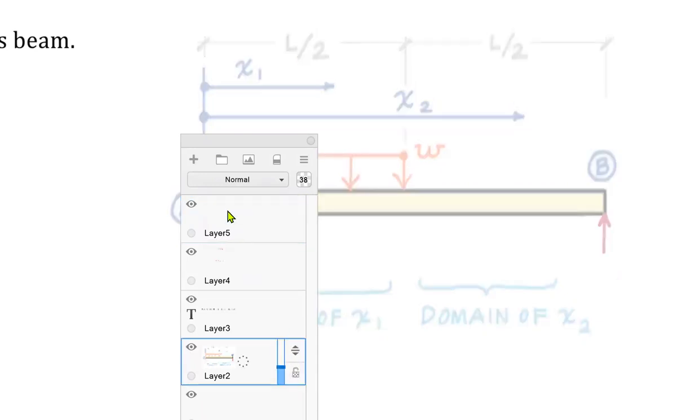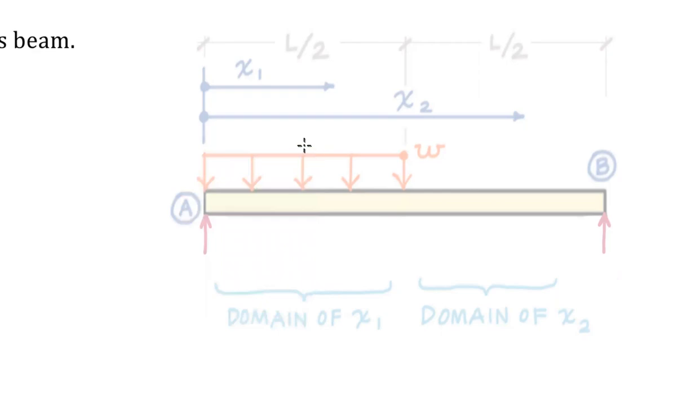I'm going to put my concentrated force or resultant force right in the middle of that load distribution. And it's equal to the load intensity of W times the distance of L over two. And that is located L over four from the left most fiber and then three L over four over to fiber B.